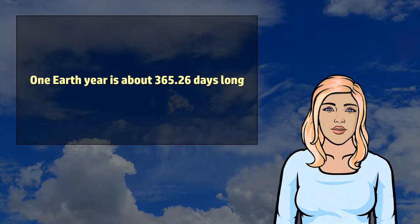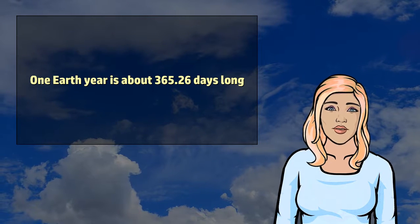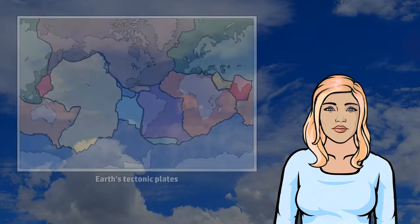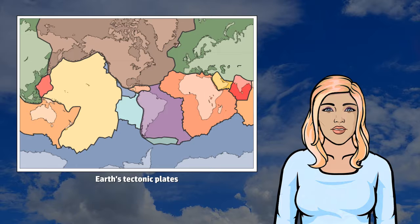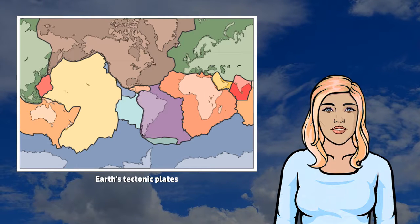Earth is the densest planet in the Solar System and the largest of the four terrestrial planets. Earth's lithosphere is divided into several rigid tectonic plates that migrate across the surface over periods of many millions of years.